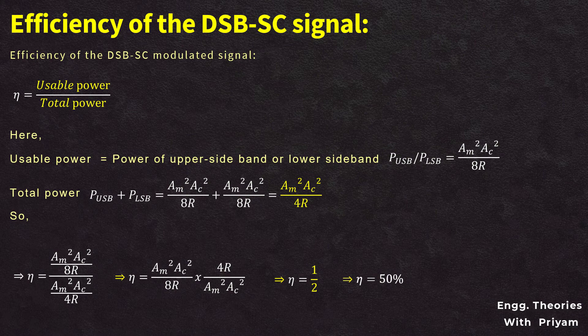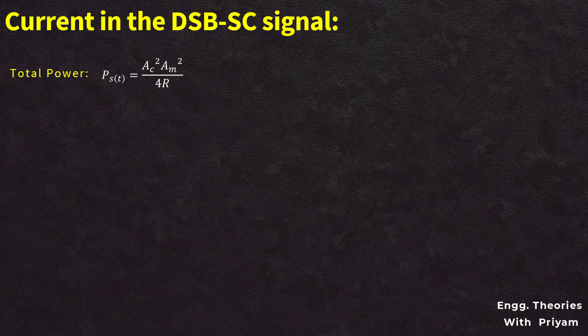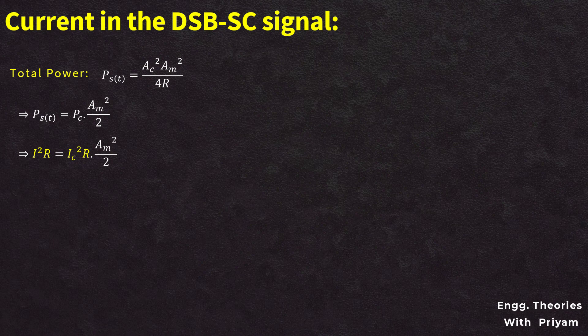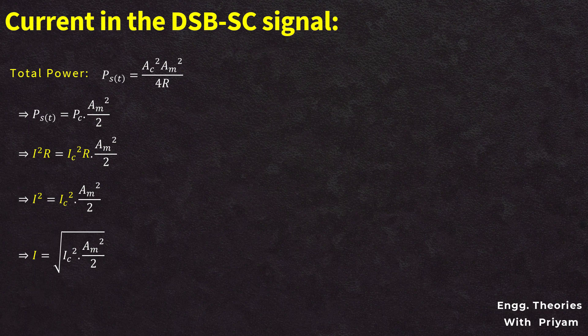Now let us calculate the current in the DSBSC modulated signal. PST = AM²·AC²/(4R), and since AC²/(2R) = PC (carrier power), PST = PC·AM²/2. Replacing PST with I²R and PC with IC²R, we get I² = IC²·AM²/2, so the current I = IC·√(AM²/2).